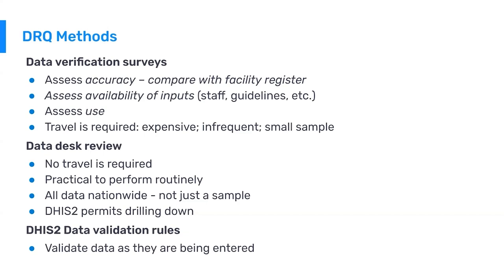The other method is data desk reviews. As the name implies, no travel is required — you're sitting at a desk looking at routine data coming in, usually monthly or more frequently. You interrogate that data using the full suite of DHIS2 tools: looking for outliers, consistency over time, internal and external consistency. You use DHIS2 to drill down to where the problems are and then reach out to individuals managing those facilities to alert them that a problem has been identified.